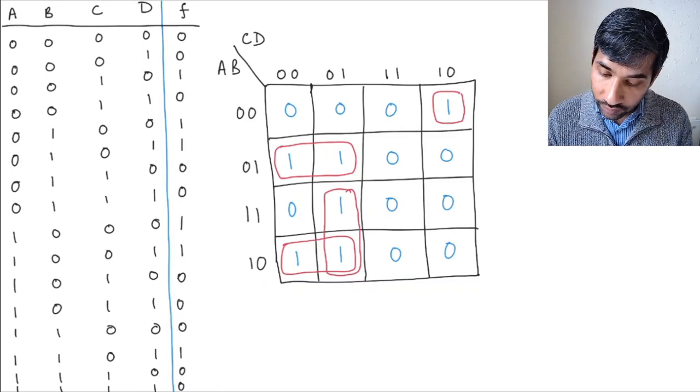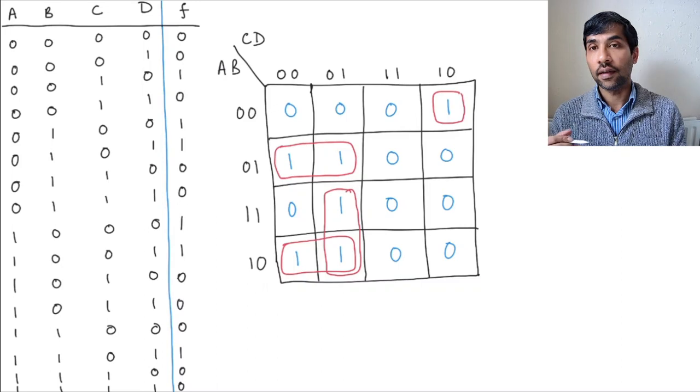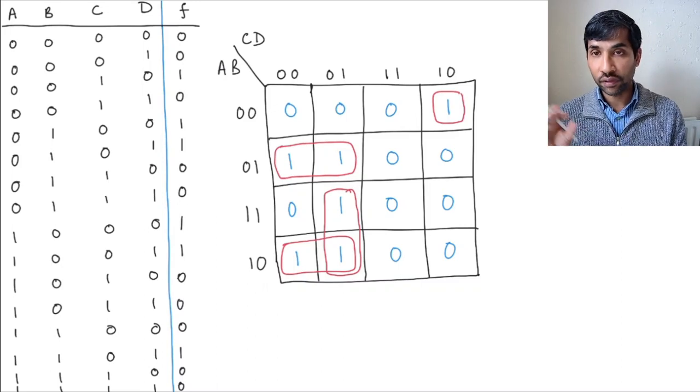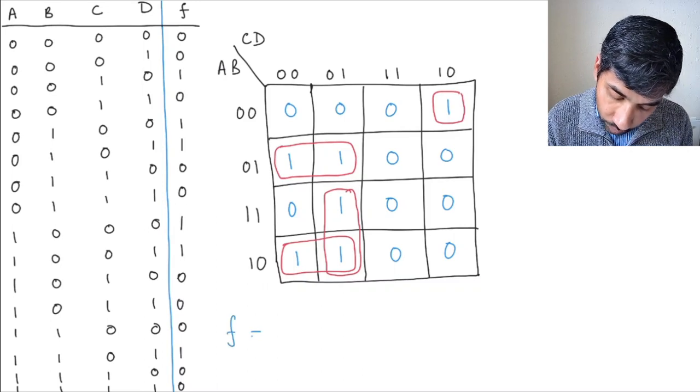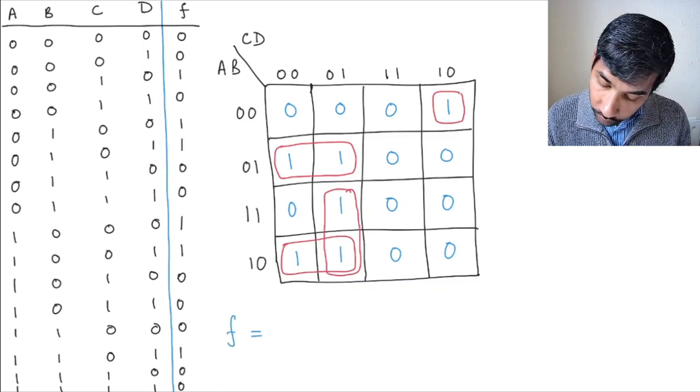And so let's write the terms for each of the groups that we have plotted on the K-map. So F will be equal to what?